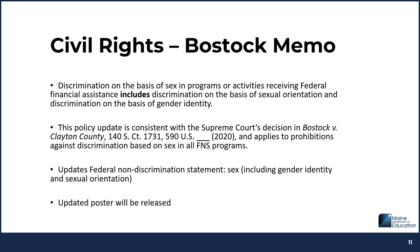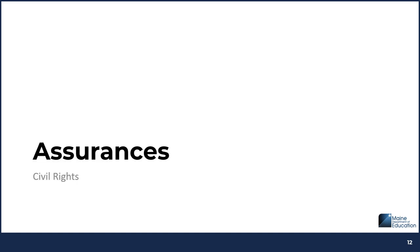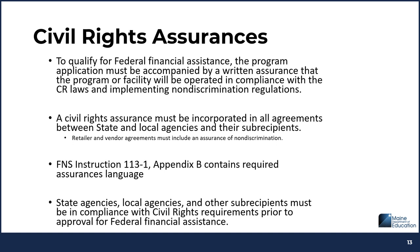The nondiscrimination statement has been updated to clarify the definition of sex, and updated posters will be released. The next topic is civil rights assurances. To qualify for federal financial assistance, the program application must be accompanied by a written assurance that the program or facility will be operated in compliance with the civil rights laws and implementing nondiscrimination regulations. A civil rights assurance must be incorporated in all agreements between state and local agencies and their subrecipients. Retailer and vendor agreements must include an assurance of nondiscrimination. FNS Instruction 113-1 Appendix B contains required assurances language. State agencies, local agencies, and other subrecipients must be in compliance with civil rights requirements prior to approval for federal financial assistance.